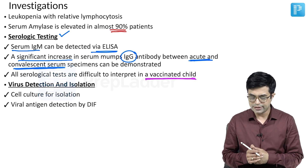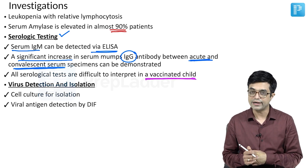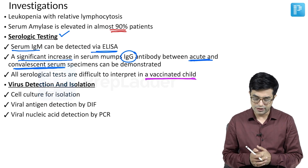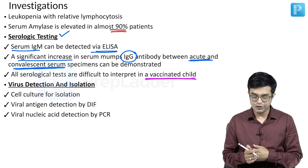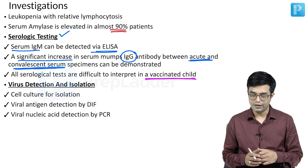Viral antigen detection can be done by direct immunofluorescence. And viral nucleic acid detection can be done by PCR.